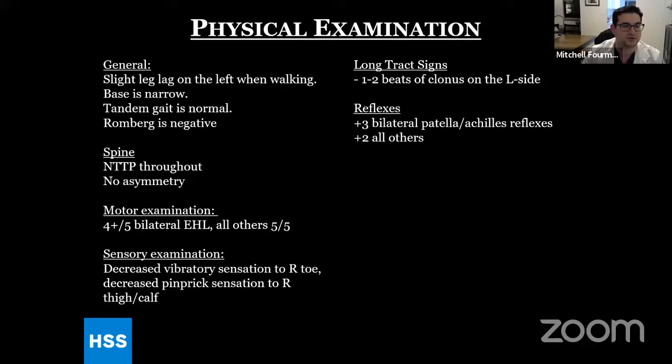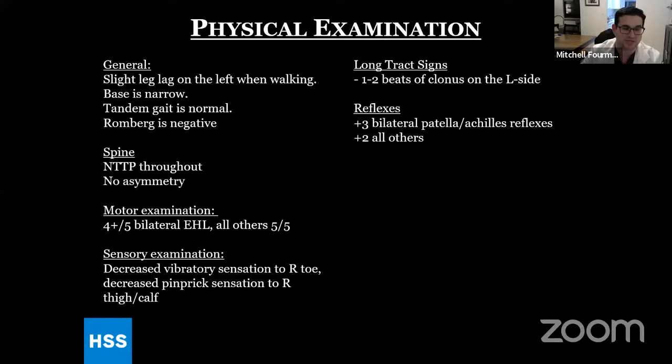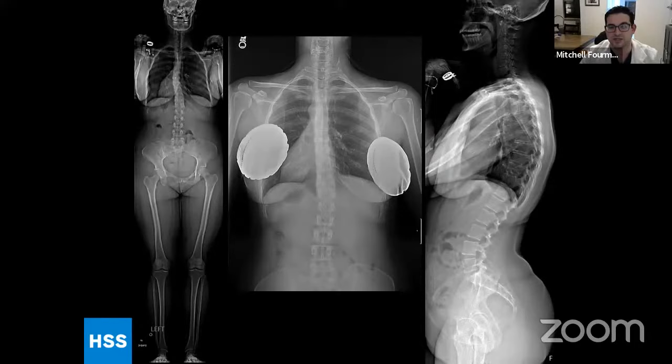Patient's medical history is pretty unremarkable — she did have Lyme disease treated without sequela back in 2019. She's a stay-at-home mom, a nonsmoker, and walks with no assistive device. On exam, she had normal tandem gait but a positive Romberg. She had a narrow base and a left leg lag while walking, occasionally dropping her left foot. She had four-plus out of five bilateral EHL, weaker on the left, and no tenderness to palpation in her spine. She also had some decreased vibratory sensation, particularly on the right side.